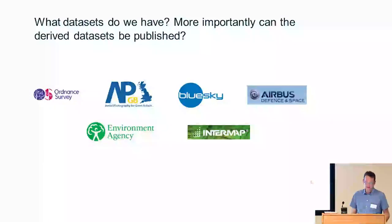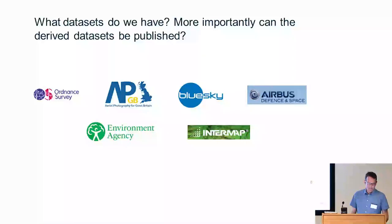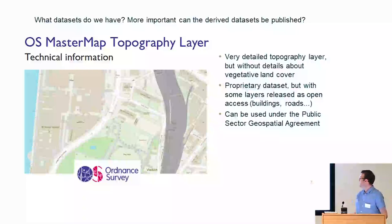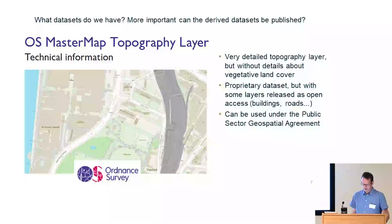Tiana started looking at what datasets we have within BGS and what we could use to create a high-resolution land cover dataset. One that was clearly very useful was the OS MasterMap topography layer. It's a very detailed topography layer, but it doesn't have details on vegetative land cover. It's proprietary, but at the time it was made available through the Public Sector Geospatial Agreement, which meant we could really make use of it. It serves as the basis for the impermeable surfaces within the area.